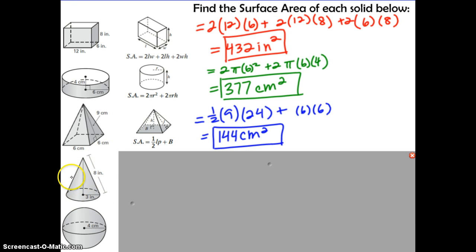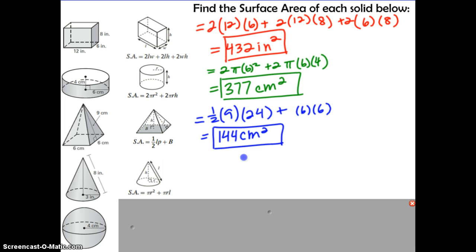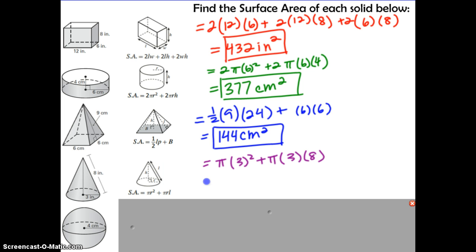Next, let's look at this cone. Locate the cone on your formula sheet. The two values to substitute in are the radius and the slant height. We calculate pi times the radius squared plus pi times the radius times the slant height. Plugging that into the calculator gives 103.7 inches squared.